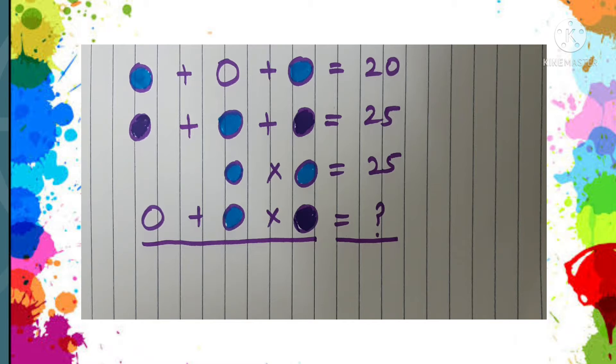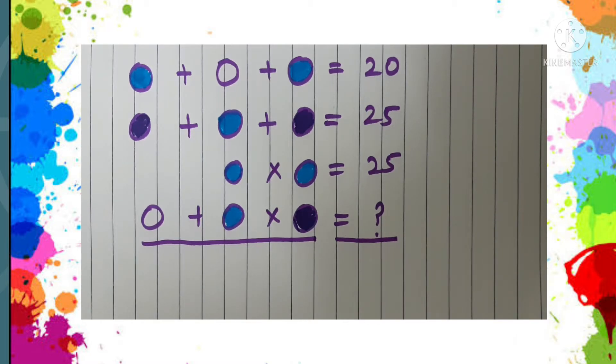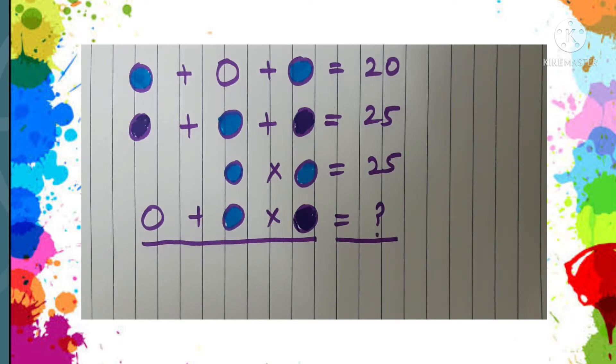Okay, let us see how we get the answer. Here you can see that there are some blue colored circles, some white circles, and some purple colored circles.